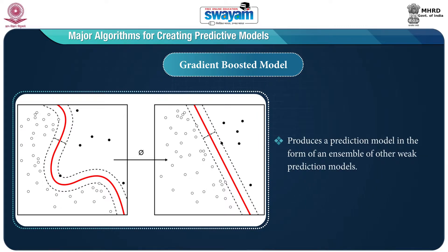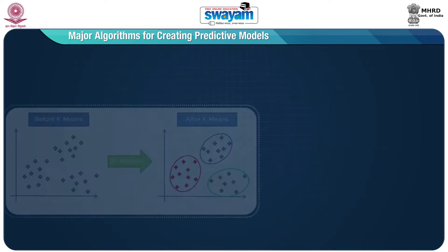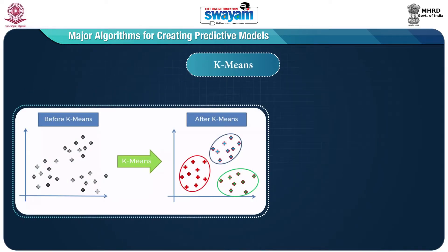The next one is the gradient boosted model — this produces a prediction model in the form of an ensemble of other weak prediction models. It builds the model in a stage-wise fashion and generalizes them by allowing optimization of an arbitrary differentiable loss function.